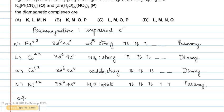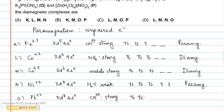Complex O is K₂[Pt(CN)₄]. Here Pt exists in the +2 state, and the electronic configuration is 3D⁸, 4S⁰. CN⁻ is a strong field ligand that causes spin pairing to occur in Pt²⁺. The orbital diagram for 3D⁸ in Pt²⁺ after ligand approach shows no unpaired electrons. Therefore, K₂[Pt(CN)₄] will be diamagnetic.